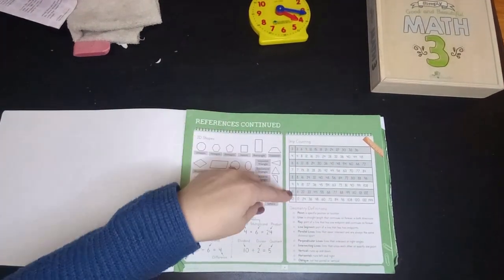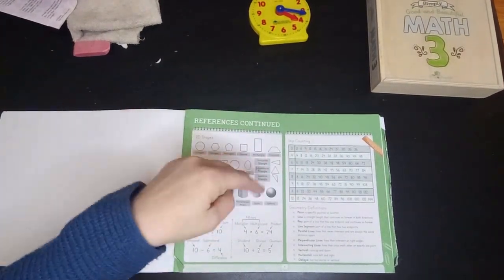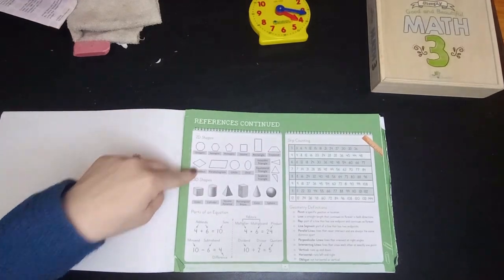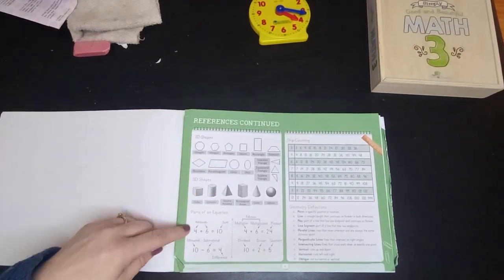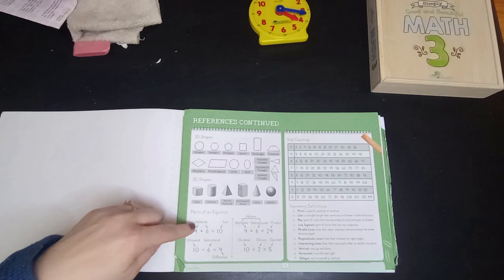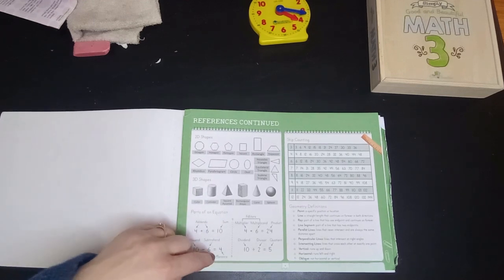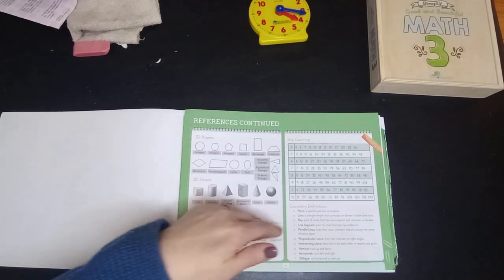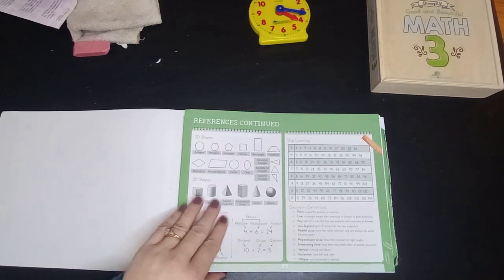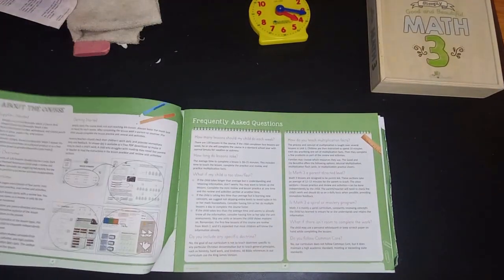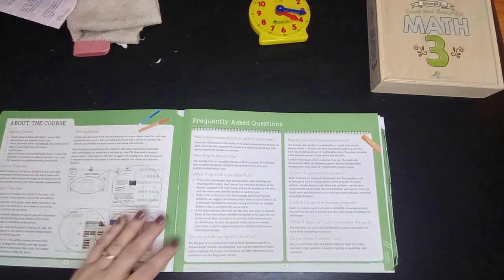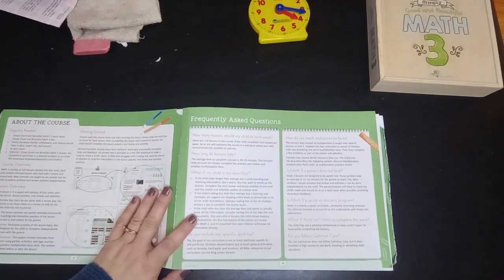Has a reference sheet, skip counting chart, and different shapes, so thinking what the words mean, addend, sum, minuend, subtrahend, difference, multiplier, multiplicand, product, those words that are useful, and some parts of geometry. It tells you what you need.